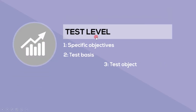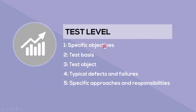In the upcoming lectures, for each of the test levels, we are going to cover the specific objective of that level. Then we will see what are the different test bases required — here, test bases means different types of requirements. Next, we need to understand which test object shall be tested under which test level; the test object is nothing but a test item which is under test. After that, we have to remember the type of defect and failure found under each test level. And at last, we need to know who is responsible for testing at a particular test level.